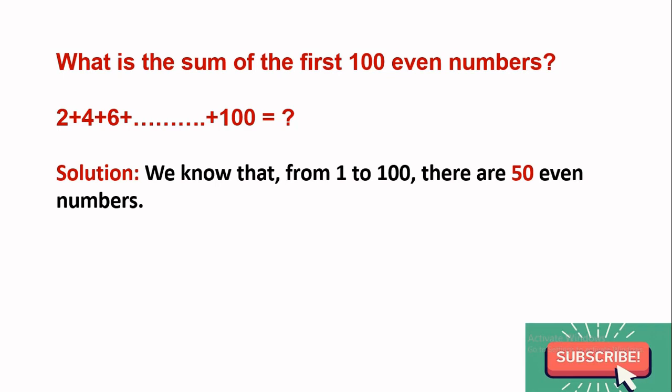If they asked what is the sum of the first 50 even numbers, from 1 to 50 there are 25 even numbers. So n equals 50 in this problem.